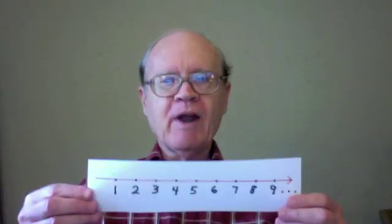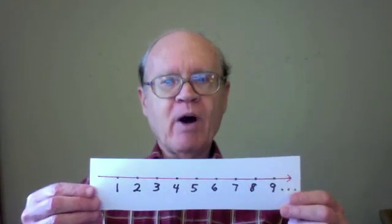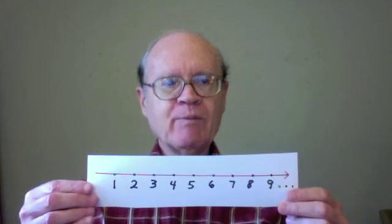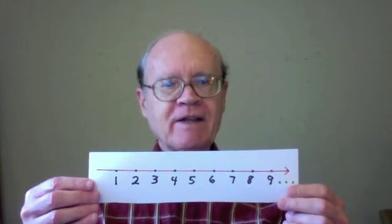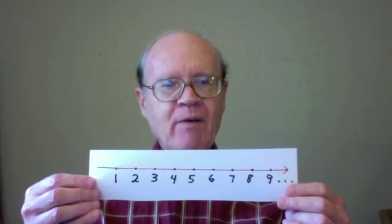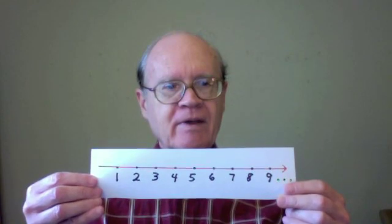Concerning counting numbers, we can show them neatly on a number line, one unit apart as we move along from left to right indefinitely. If I were to mark other positive rational numbers on the number line, that number line would soon become very congested.